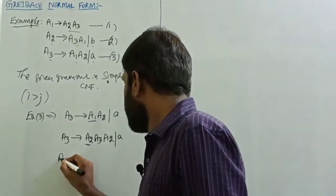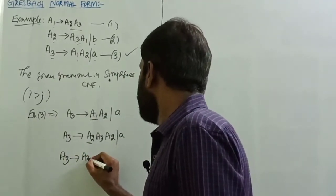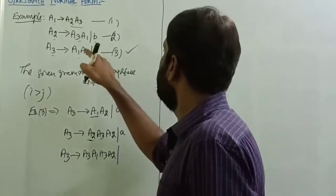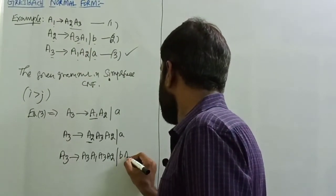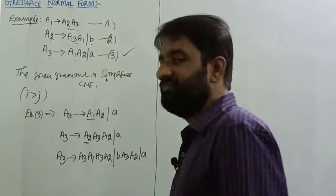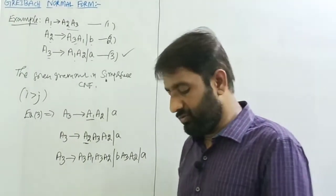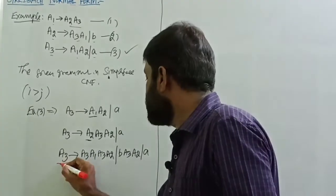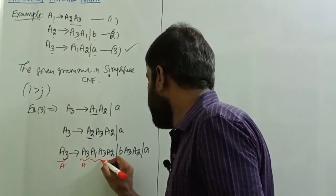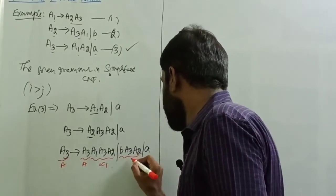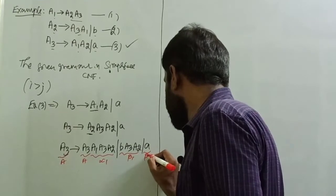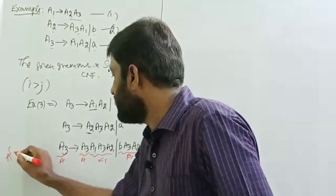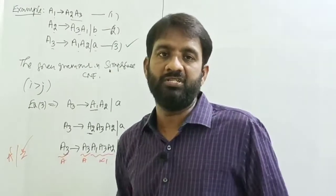After substitution, A3 tends to A3 A1 A3 A2 | b A3 A2 | a. Now this is left recursion. We apply Lemma 2 where A3 is 'A', alpha1 is A1 A3 A2, beta1 is b A3 A2, and beta2 is a. We introduce a new non-terminal Z (using Z to avoid confusion).